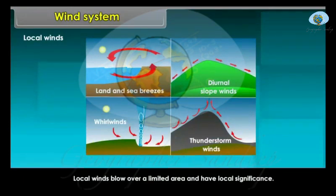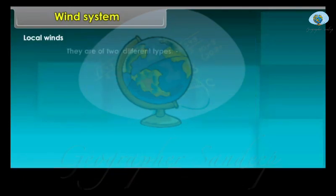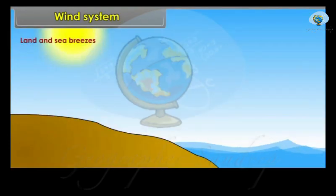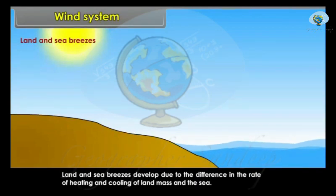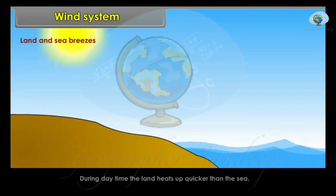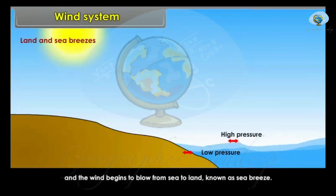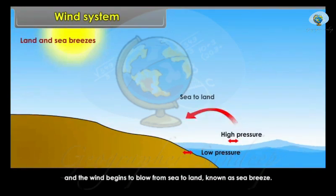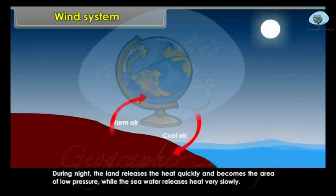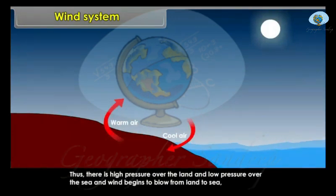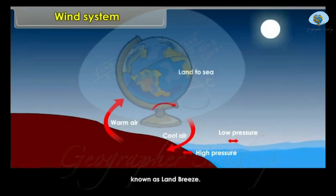Local Winds blow over a limited area and have local significance. They are of two different types: land and sea breezes, and mountain and valley winds. Land and sea breezes develop due to the difference in the rate of heating and cooling of land mass and the sea. During daytime the land heats up quicker than the sea, so a local low pressure area develops over the land and high pressure over the sea, and the wind begins to blow from sea to land — known as sea breeze. During night the land releases heat quickly and becomes an area of low pressure, while the sea water releases heat very slowly. Thus there is high pressure over the land and low pressure over the sea, and wind begins to blow from land to sea — known as land breeze.